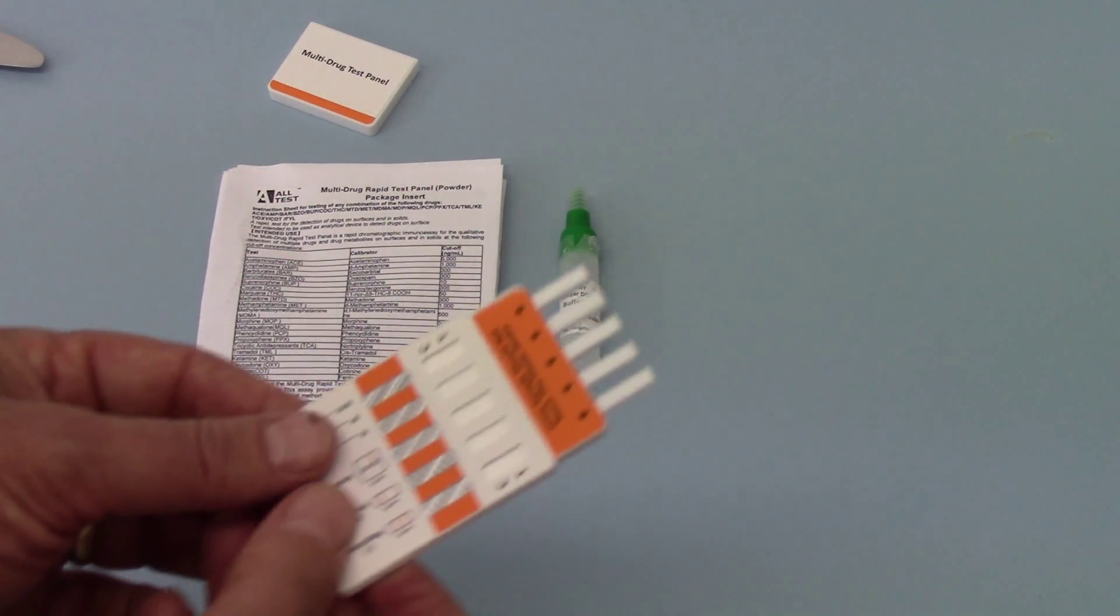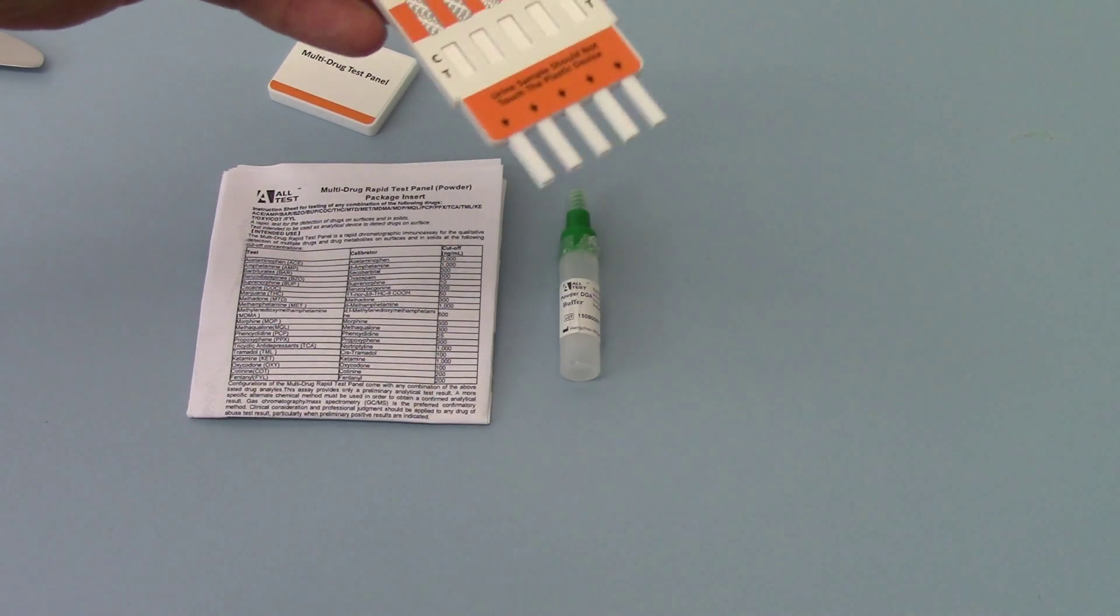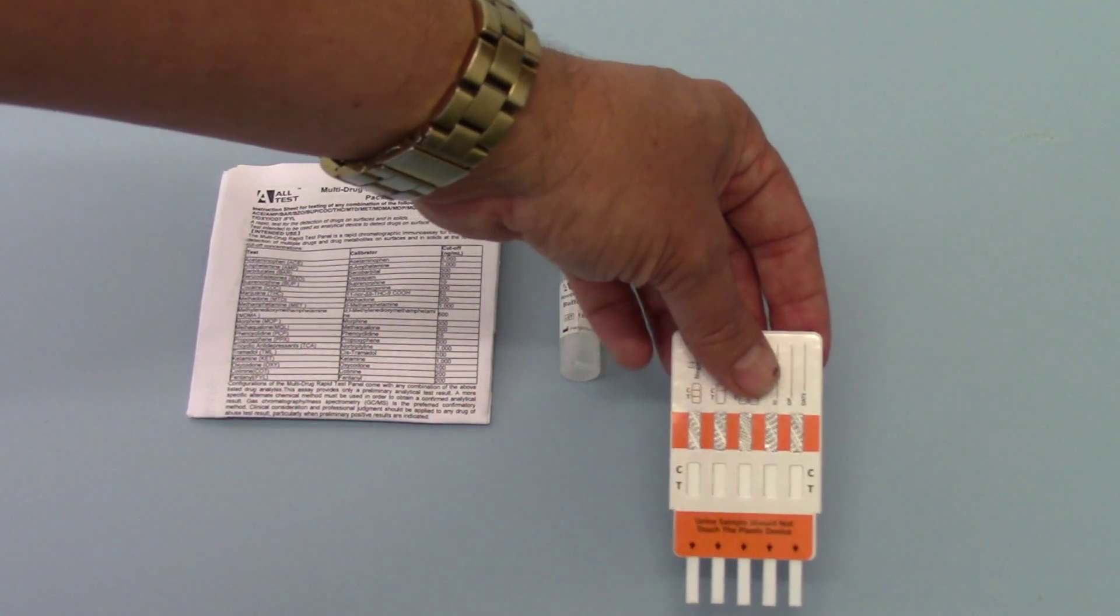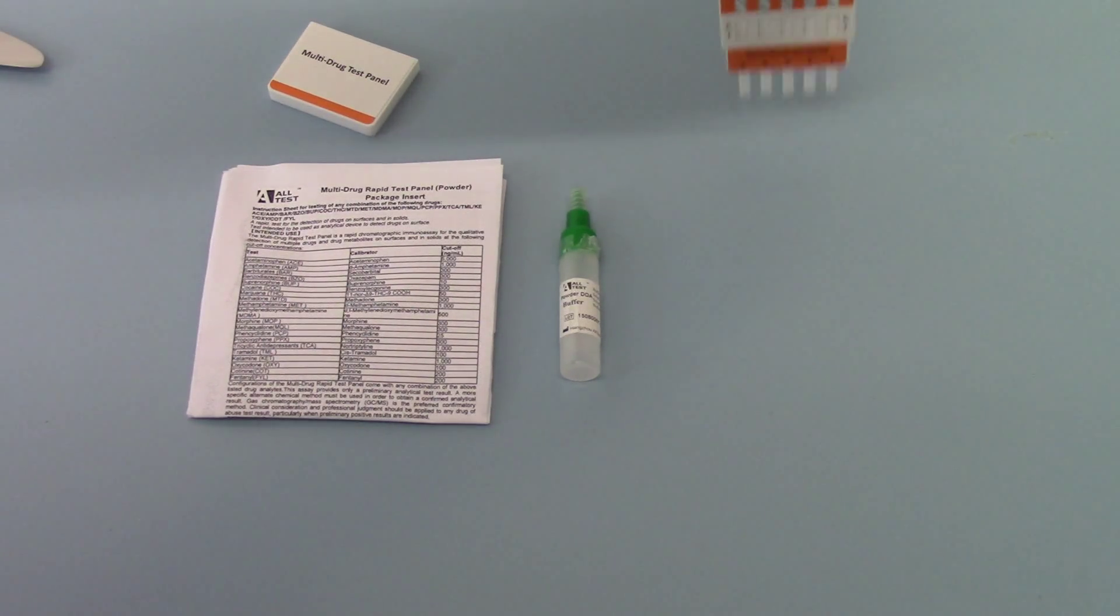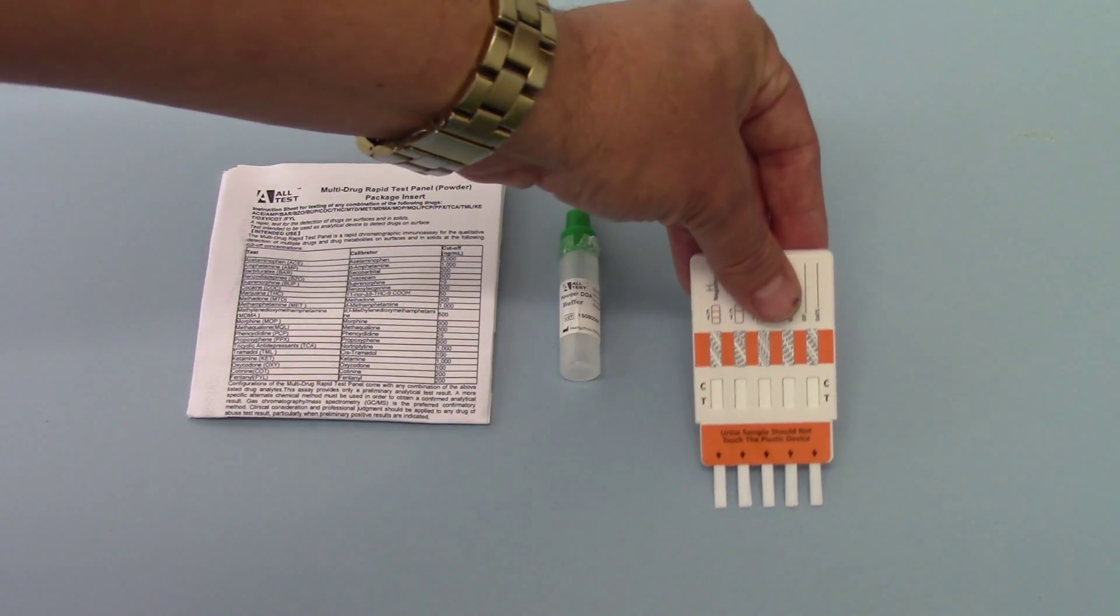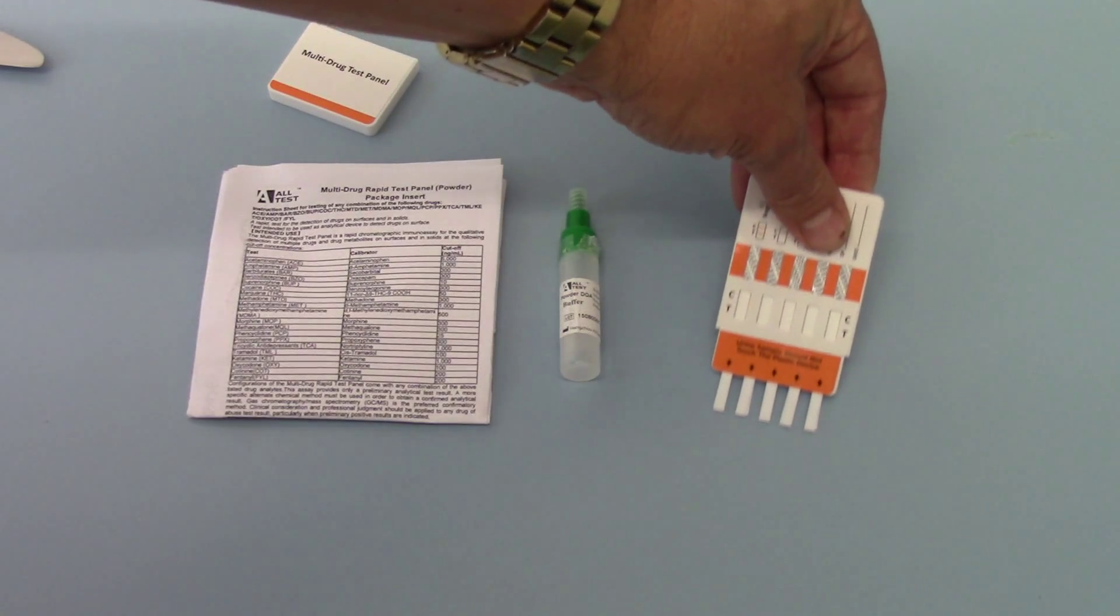Now to wipe a surface, if you suspect there's been drugs mixed or used or contaminated on a surface, all you have to do is to wipe both sides of this panel across the surface.